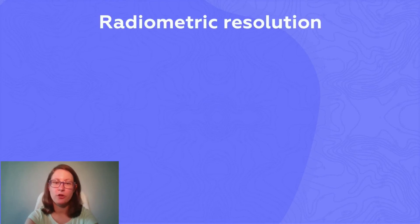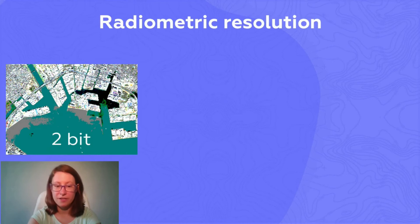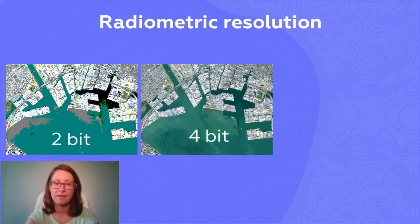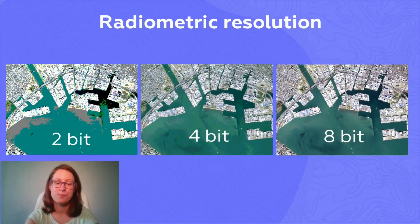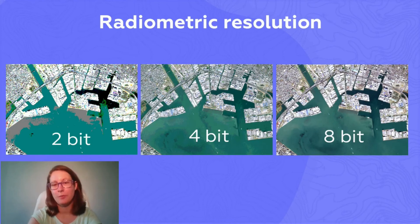It is also important how sensitive a sensor is to be able to detect small differences in reflected or emitted energy. This is called radiometric resolution. A sensor with a finer radiometric resolution requires more significant intensity levels, so that we get more information from an image.